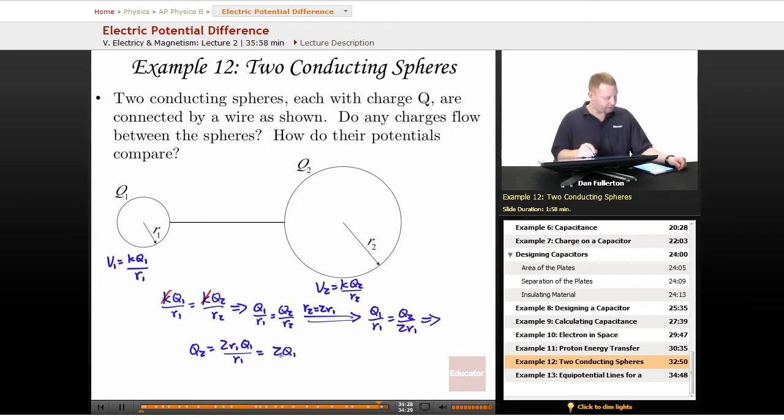Q2 is equal to twice Q1, then we must have charge flowing from 1 to 2. So our charge must be flowing that way. We'll have charge flowing from Q1 to Q2. How do their potentials compare? They've got to be equal.